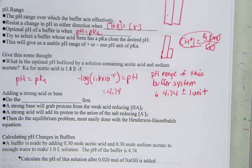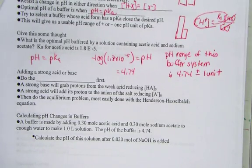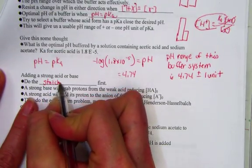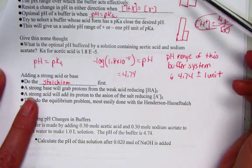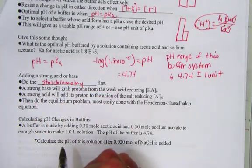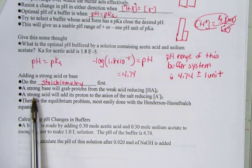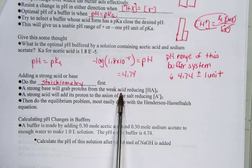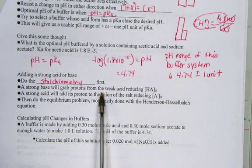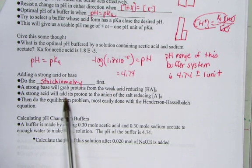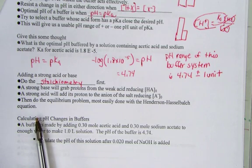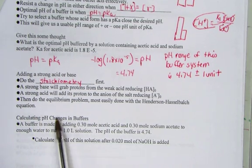If we think about a buffering system as adding a strong acid or a strong base and determining what effect it has on the stoichiometry. If we add strong acid or strong base, we saw that some of the acid would get consumed or some would get used depending upon what we added. So we have to consider the stoichiometry first. Understand a strong base will grab protons from the weak acid. It will reduce the concentration of the acid. So base plus acid will get consumed. The strong acid will add its proton to the anion of its salt, producing more of the acid and reducing the conjugate A negative. We then use the Henderson-Hasselbalch for our equation.